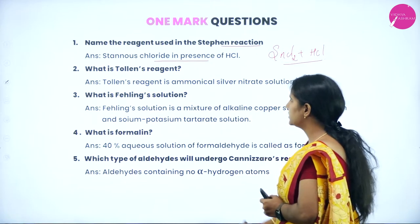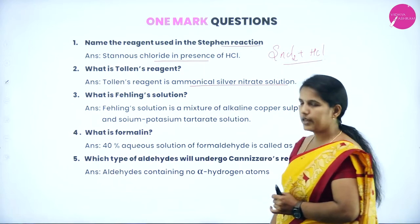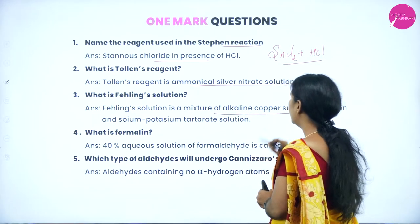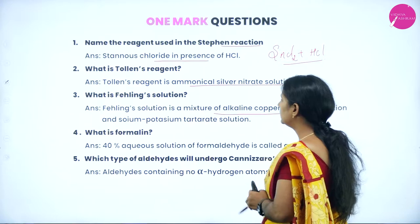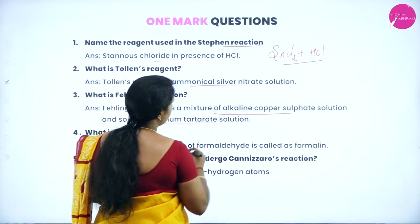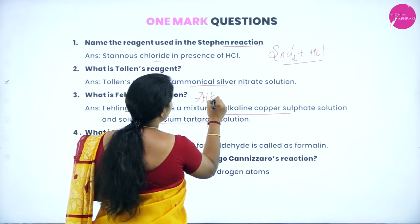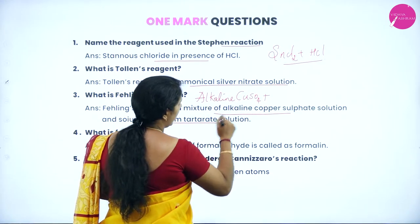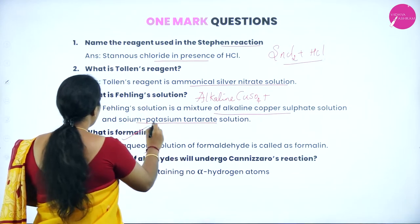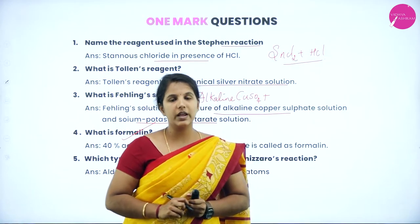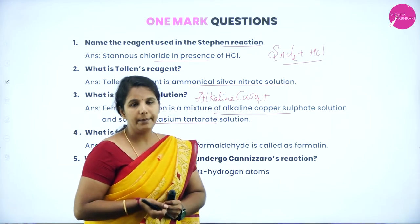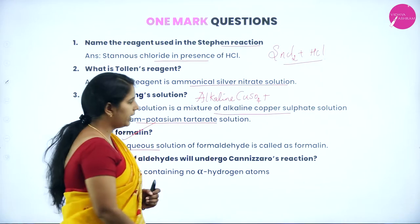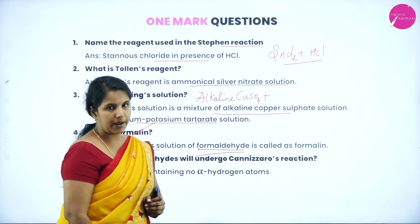What is Tollens' reagent? Tollens' reagent is an ammoniacal silver nitrate solution. What is Fehling's solution? Fehling's solution is a mixture of alkaline copper sulphate solution with sodium potassium tartrate solution. Next, what is formalin? Formalin is mainly used to store specimens in biology and it is prepared using a 40% aqueous solution of formaldehyde, which is a primary aldehyde.